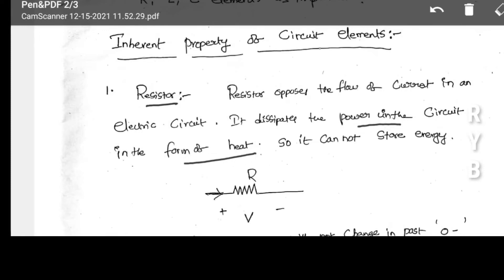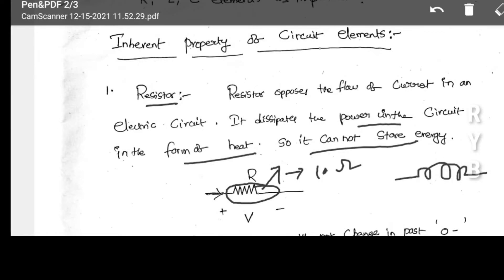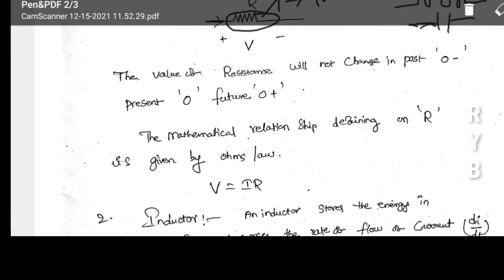The resistor dissipates power in the form of heat, so it cannot store energy. Assume a resistor of 10 ohms — the resistance value won't change and energy cannot be stored; it dissipates as heat. Therefore, due to resistance alone, transients will not appear. The value of resistance will not change at time 0 minus, 0, or 0 plus. Resistor does not alter its parameters.